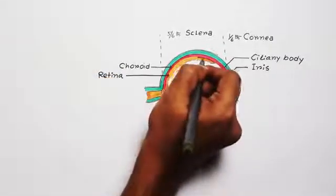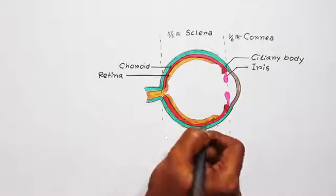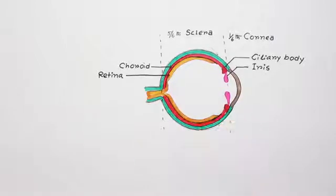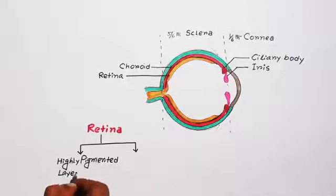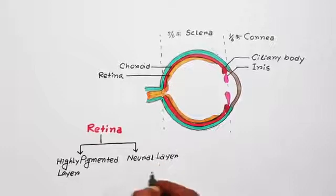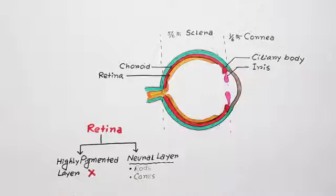If you enlarge this portion, you will see retina has two parts: one highly pigmented layer and a neural layer. This highly pigmented part is firmly attached with the choroid. Now the interesting point you should remember: rods and cones are not present in the pigmented layer. They are actually present in the neural layer.